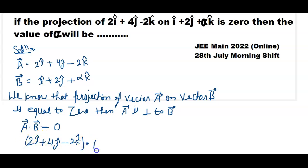Vector A dot product will be vector B, and vector B value given is i cap plus 2j cap plus alpha k cap.